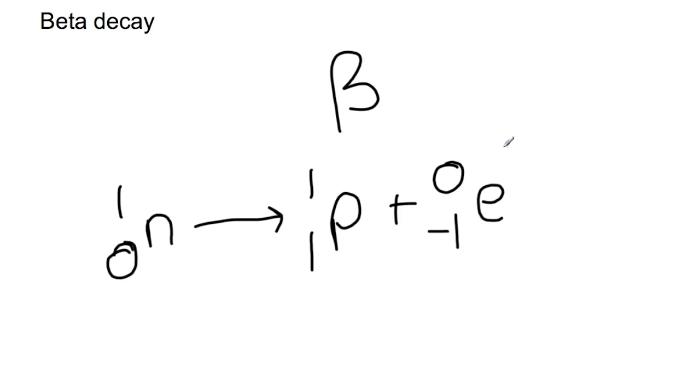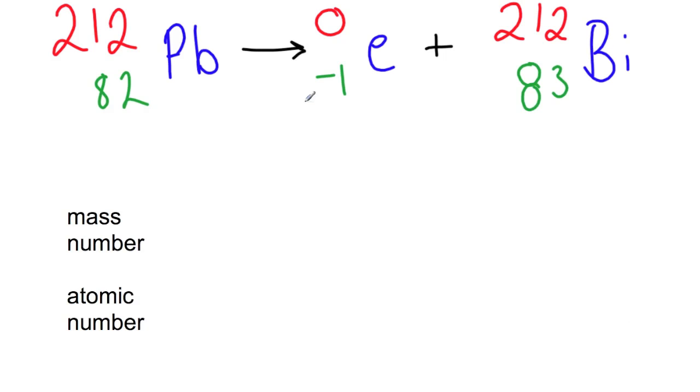We are going to be focusing on this particle here, the beta particle, and we're going to be representing it as the nuclide notation. So again, a worked example here. So in this example, we have lead 212 decaying by beta emission to give us bismuth 212.